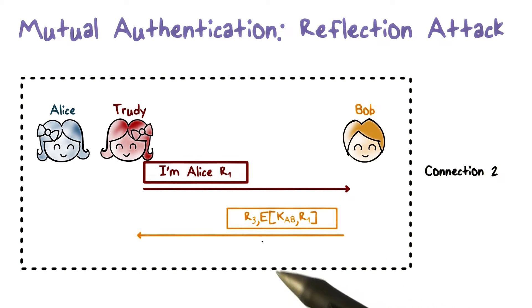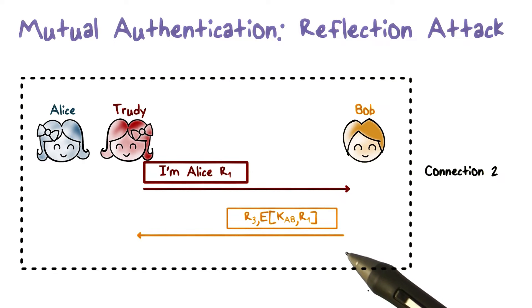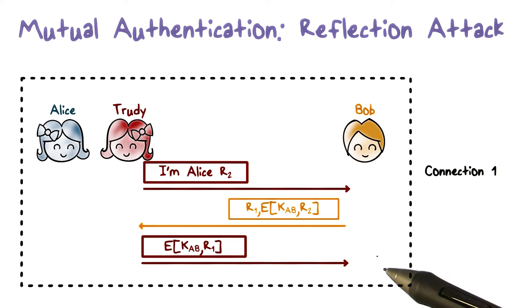Notice that Bob has sent the ciphertext of R1 to Alice. So what Trudy can do is to take the ciphertext of R1. Then Trudy can now go back to the step three of the first connection and send it back to Bob to complete the first connection.